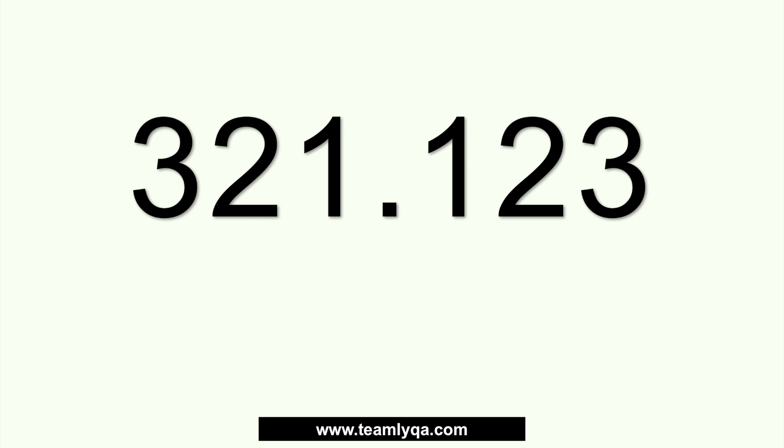So ang 321.123 is a number, pero ang 3, 2, 1, 1, 2, 3 in this number — those are digits. Huwag nyo nang magkakamalian yun kasi pag hinahanap kung ano yung digit, it's a part of a number.